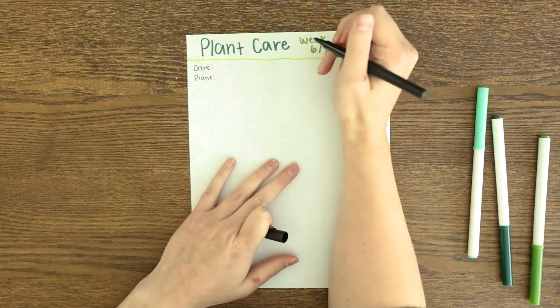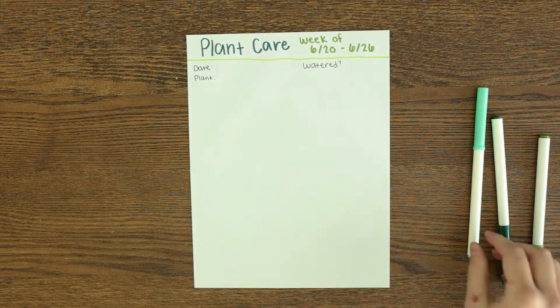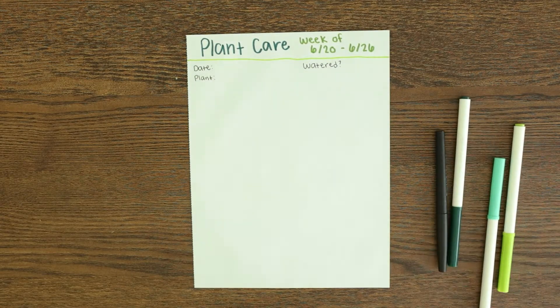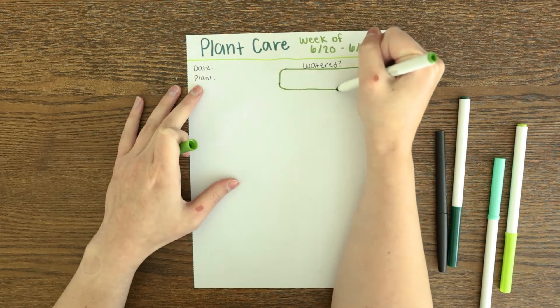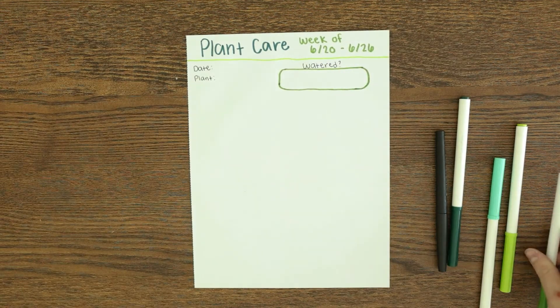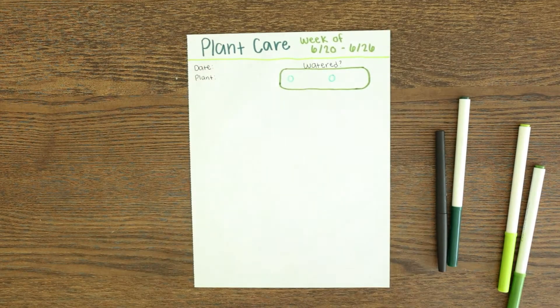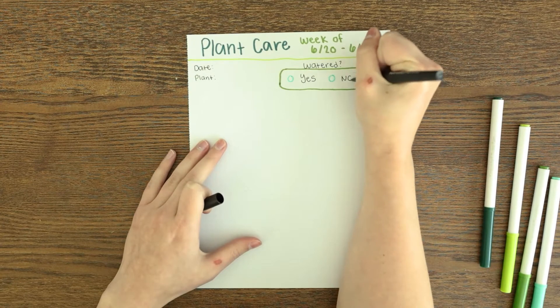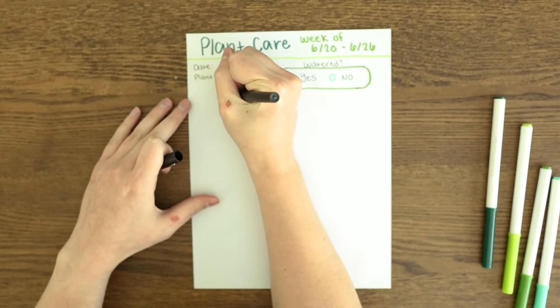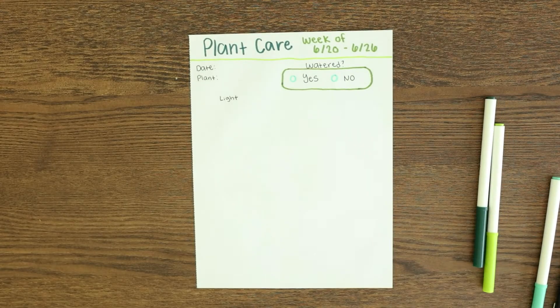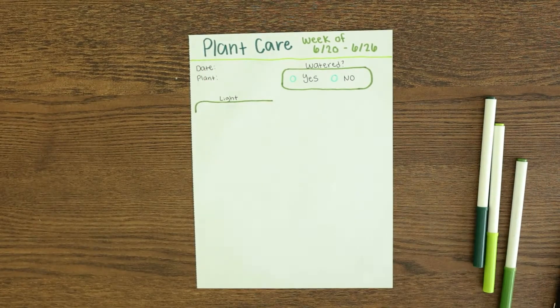First, I'm always gonna put the date just so I know which day all of this happened and which plant I took care of that day. I don't always water or take care of every single plant every day, it's different based on each plant. So you won't have to make a log for every single plant every single day because if you have a lot of plants, that would be a lot of work.